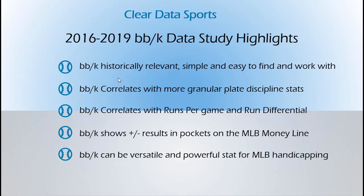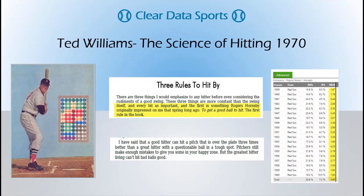Let's talk a little bit about Ted Williams and the Science of Hitting. I think this is the best book of all time — of course I'm a baseball handicapper, so I'm biased. Ted Williams, the best hitter of all time, says the most important thing, rule number one: get a good ball to hit. His thought was that a good hitter can hit a pitch over the plate three times better than a great hitter with a questionable ball in a tough spot. This gave me the inspiration for this particular study.